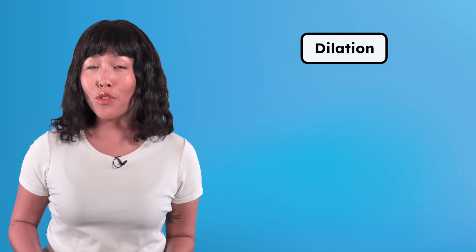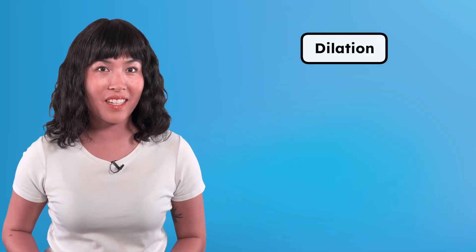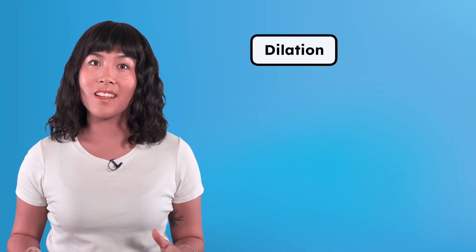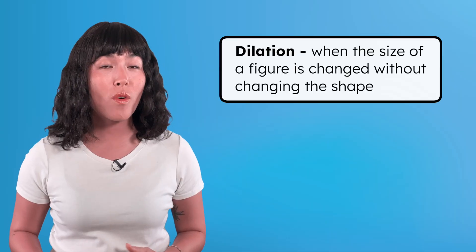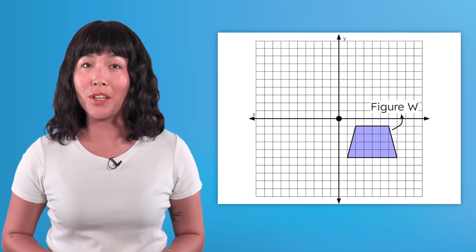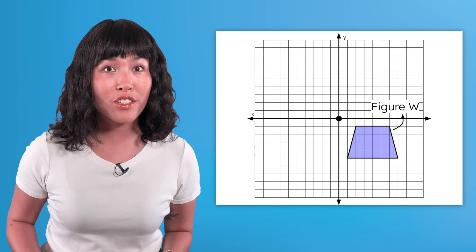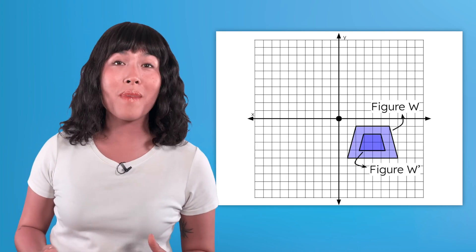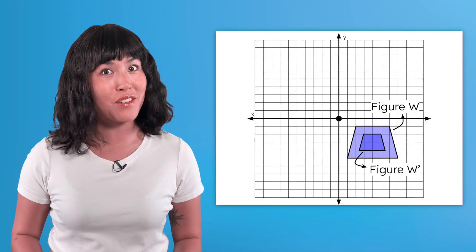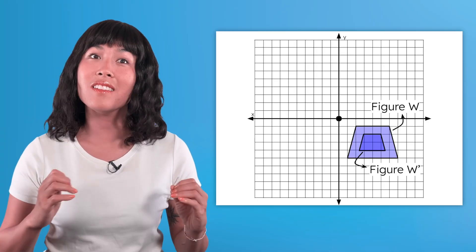The last transformation is called dilation, which is a fancy name for creating scaled images. It's when the size of a figure is changed without changing the shape. Let's dilate this figure W. Applying a scale factor of one-half, the dimensions of figure W prime will be exactly half the dimensions of the pre-image, but still the same shape.